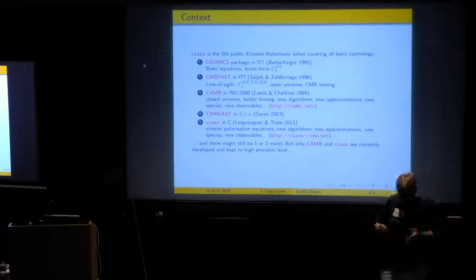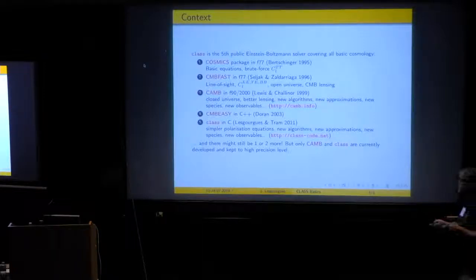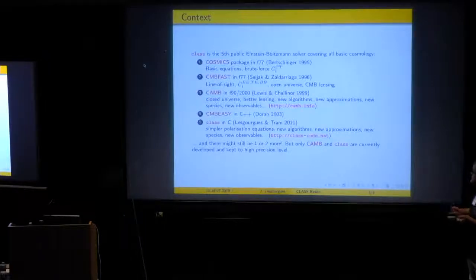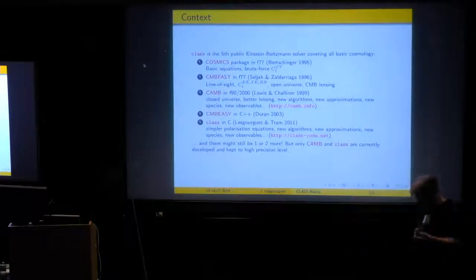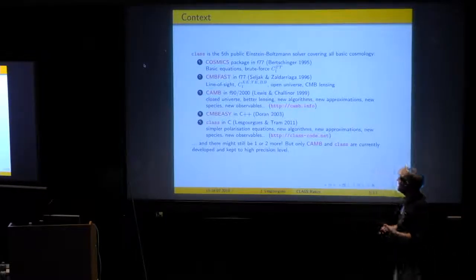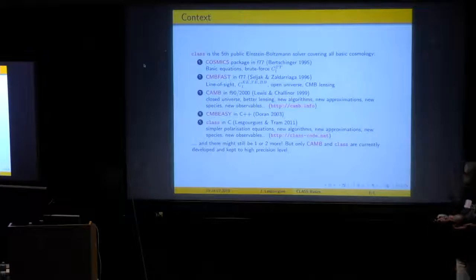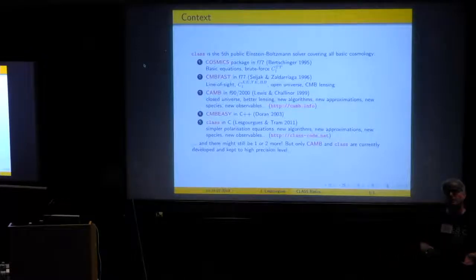Then there were other attempts. Some never became public. Martin White had his version. Some folks in Paris had another version. They didn't make it to the public release. It was a public release of a nice attempt to write a CMB code in object-oriented style in C++. It was called CMBeasy. It was done by Michael Doran, a German student. It was a nice code. It was also improving on several fronts, like the tight coupling approximation or the possibility to choose your gauge. But Doran left physics and did not push the code fine enough in terms of precision.